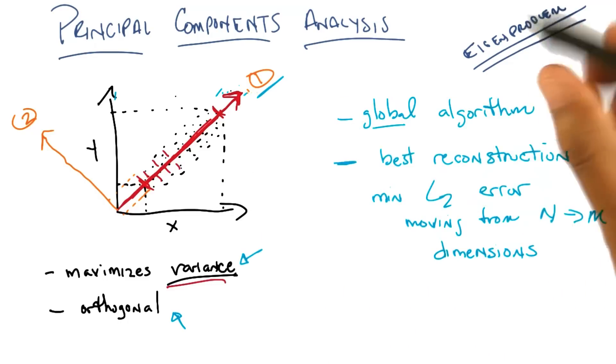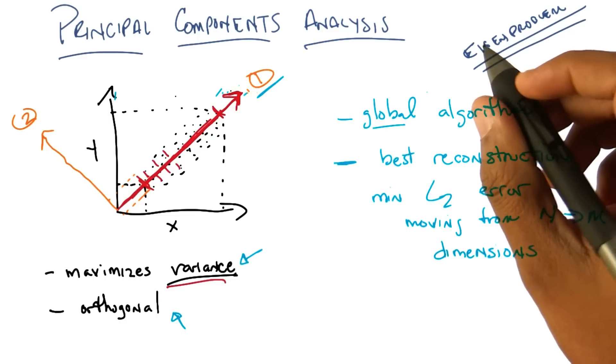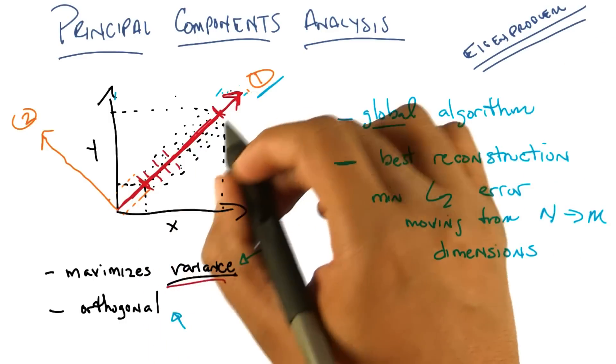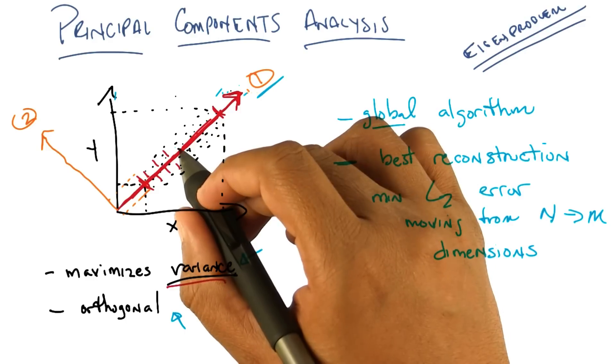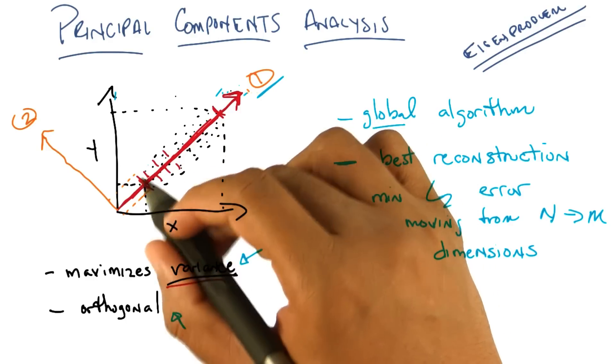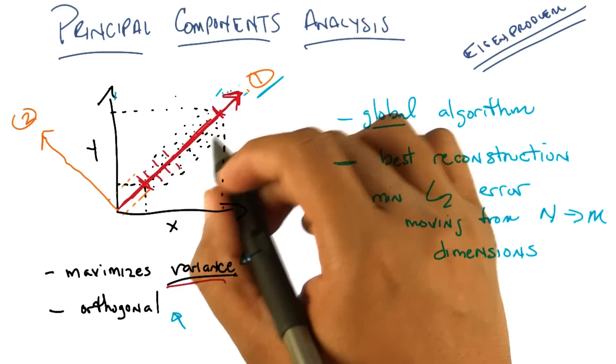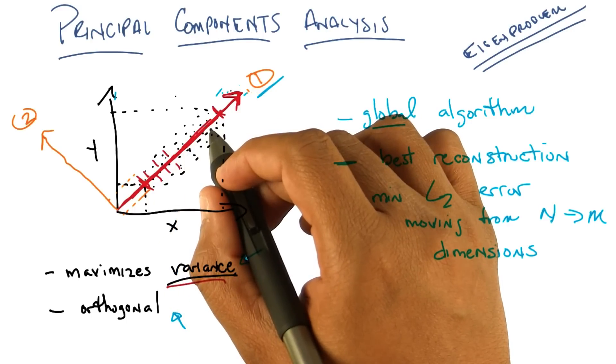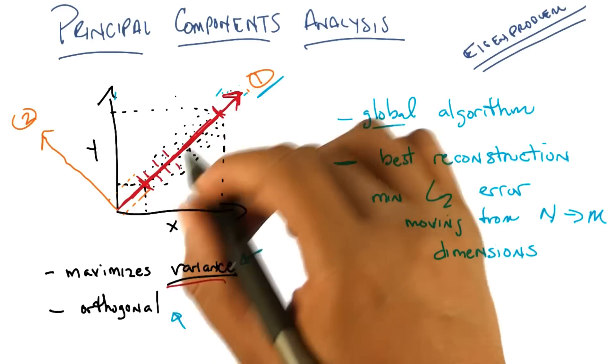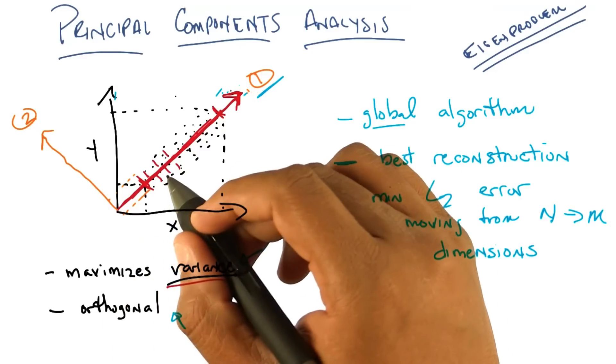This particular notion is called the Frobenius norm, but that's really just talking about distance. What this means is that if I project onto this single axis here, and then I compare it to where it was in the original space, the distance, the sum of all the distances between those points, will actually be the minimal that I could get for any other projection. Cool.